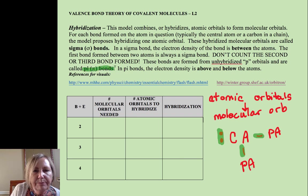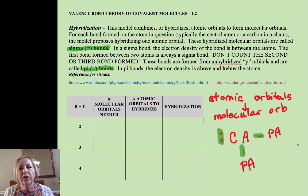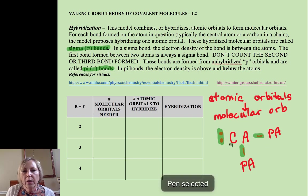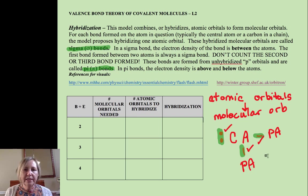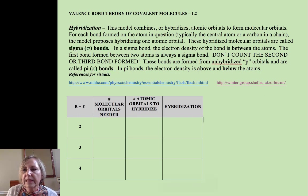Now this model is not dealing with pi bonds. A pi bond is the second and third bond formed. We're only talking about sigma bonds. Sigma bonds are the first bond formed, and their electron density is directly between the two atoms. In this case, we would need three regions in space, so one, two, three regions in space to describe that.